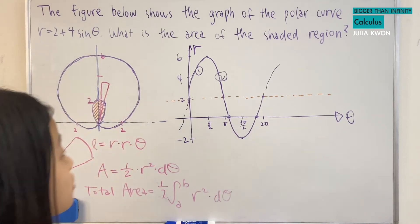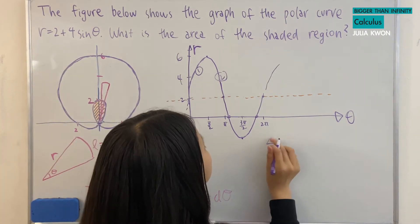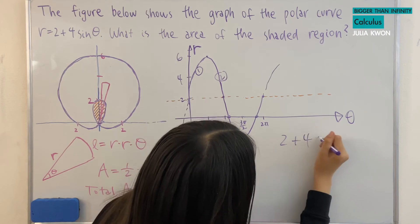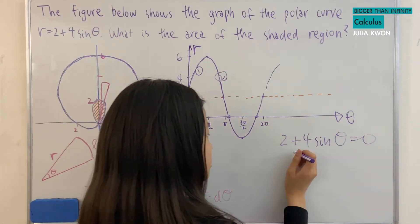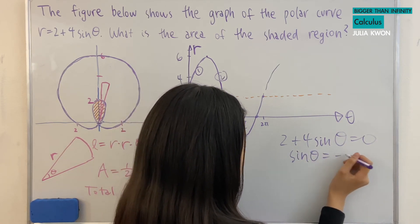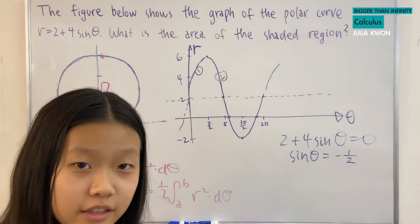And to do that, we're going to set our polar equation equal to zero. So 2 plus 4 times sine theta equals zero. That means that sine theta will have to equal negative one half.